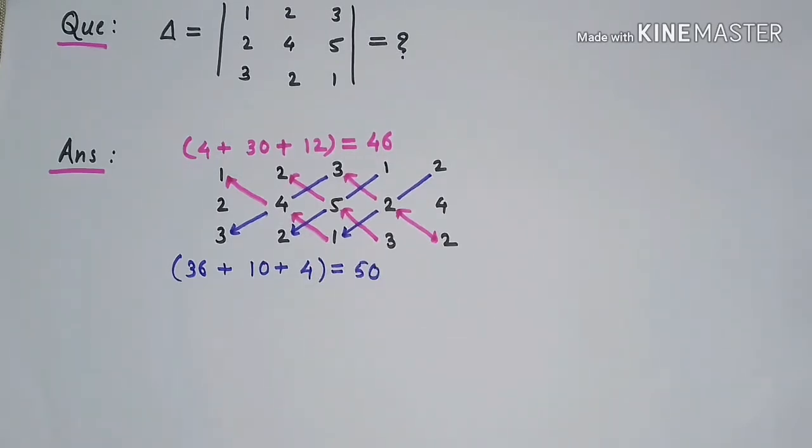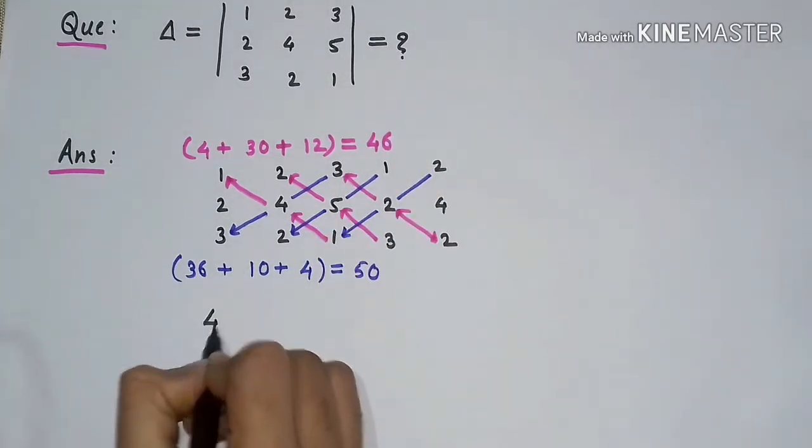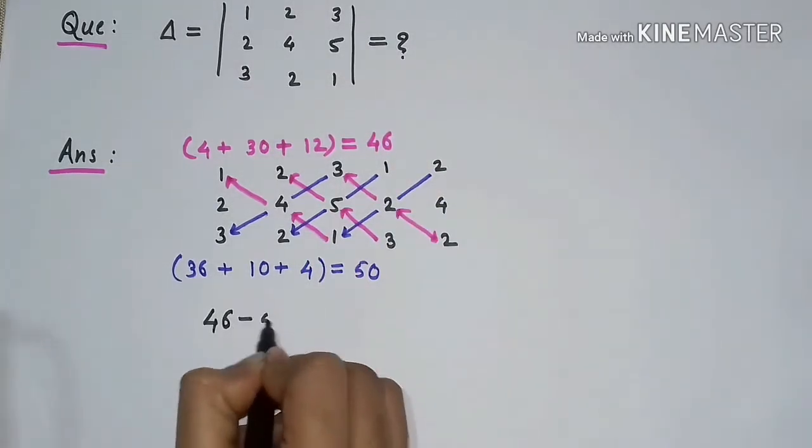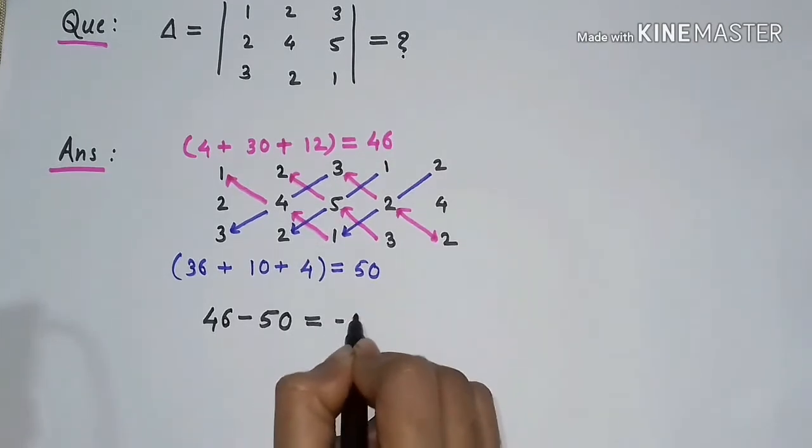The most important step is that we have to subtract: 46 minus 50, which is minus 4. So delta equals minus 4, which is the final answer.